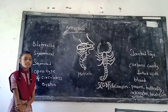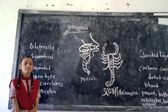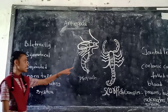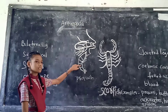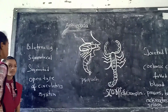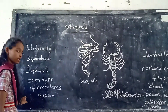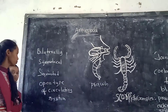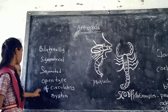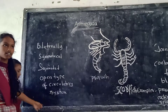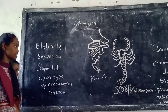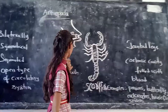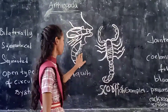Bilaterally symmetrical means two equal halves are the same design. These are segmented. Heart pumps blood into spaces — this is called the open type of circulatory system. These are jointed legs.